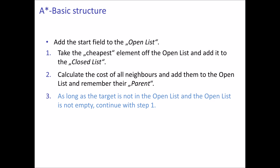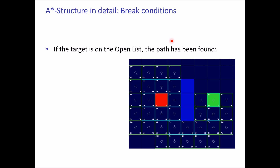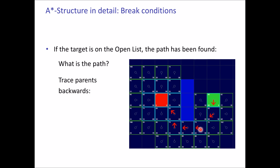Step three covers the breaking conditions for this loop. If the target is on the open list, the path has already been found. We basically just trace the parents backwards to the starting field, and that is our path. This is the reason why we have to remember the parents of each field — we use them to determine the final path. So the path is traced: the parent of this field is this field, the parent of this field is this field, and so on.